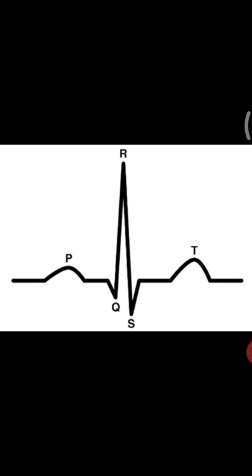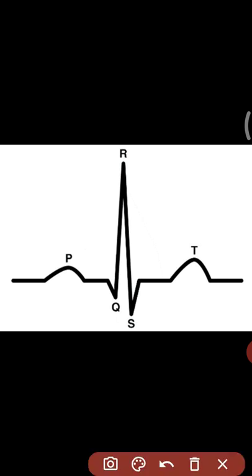Any deviation from the standard waveform is identified as an abnormality. The ECG waveform consists of P, Q, R, S, T, and U components. The P wave is the baseline which represents depolarization of the atrial muscles — it is the normal isopotential line.